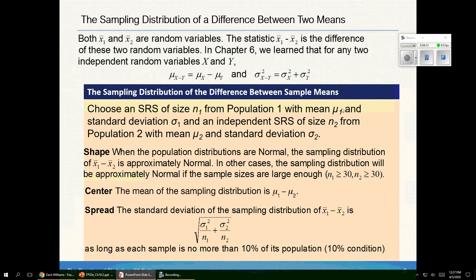Both x-bar 1 and x-bar 2 are random variables. The statistic of x-bar 1 minus x-bar 2 is the difference in these. And in Chapter 6, we talk about combining standard deviations. To find the standard deviation, we would combine the variances, even when that was a minus. So here's how that looks here.